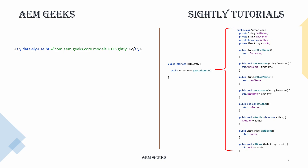The author bean class has a few properties: first name, last name, author name, and one list it is returning. I'm setting the values of this bean and then returning through a method called getAuthorInfo to Sightly. I want to print these values — first name, last name, and the other values. When I want to print first name, it will get the object of the Sling model.